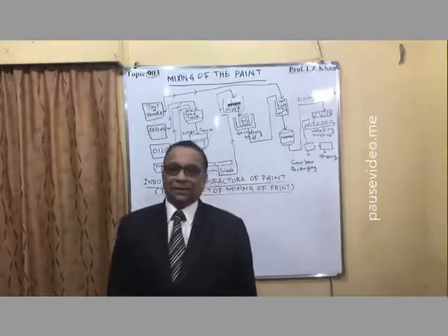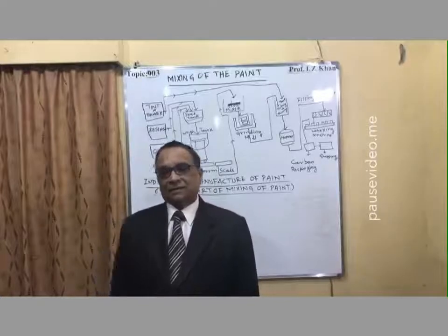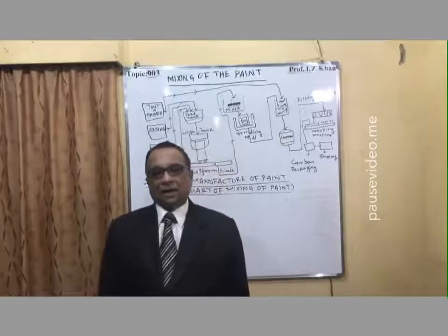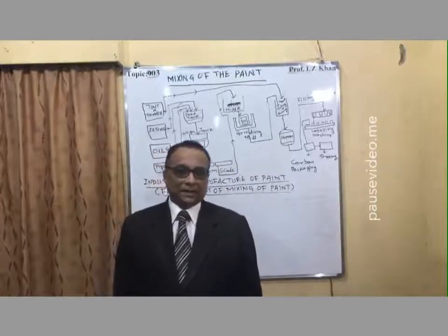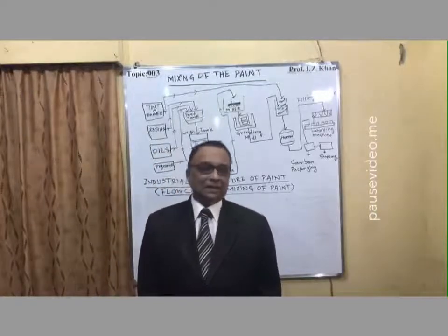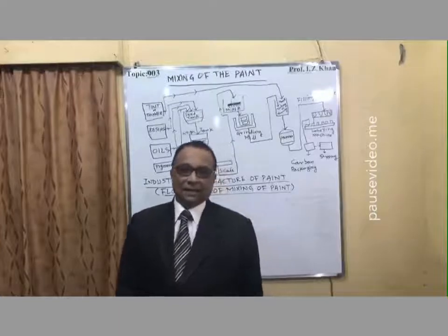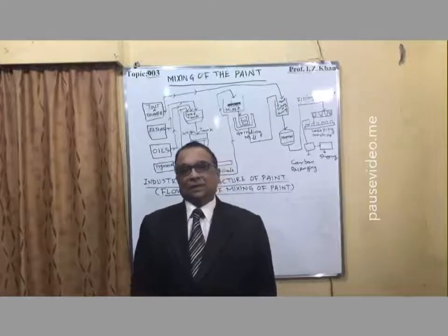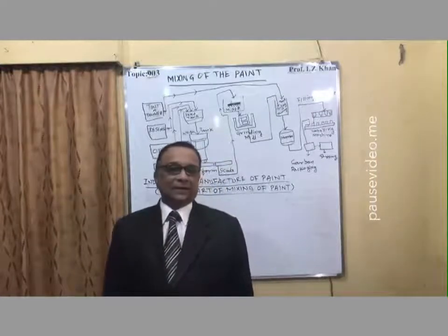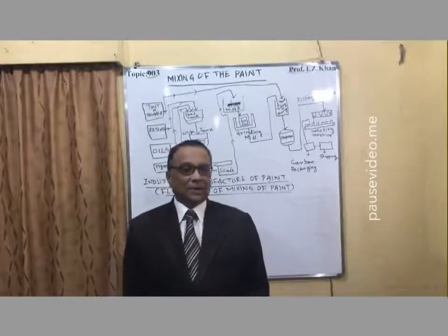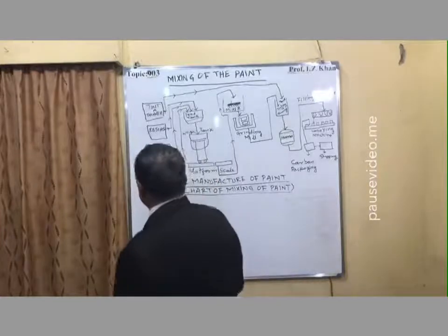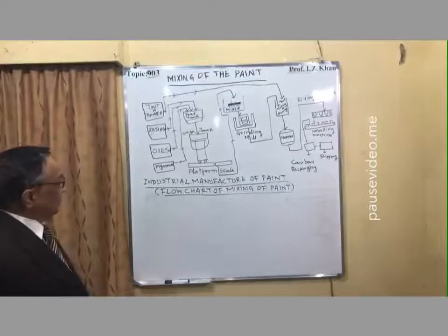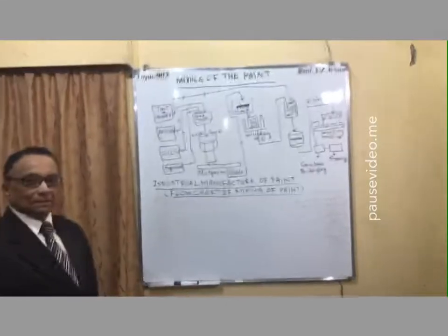Here I have given the chart diagram showing how these ingredients are mixed — that is the full movement of the different ingredients in the different compartments. So we are looking at this diagram that is known as the industrial manufacture of paint, flow chart of mixing of paint.